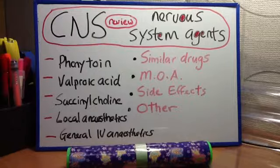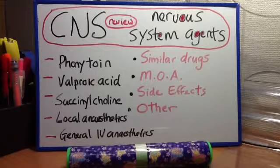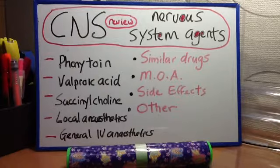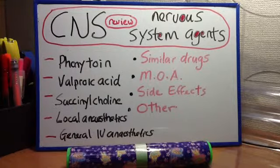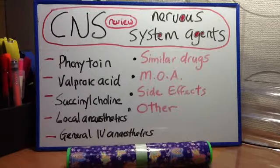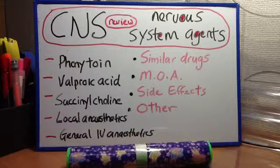General IV anesthetic agents. Similar drugs include propofol, ketamine, benzodiazepines, barbiturates, and opioids. MOA for propofol: mechanism of action is unknown, but it may act to prolong activity of the GABA receptor, thereby potentiating the effect of GABA at the postsynaptic neuron. There is also etomidate and ketamine. Clinical uses for propofol: induction and maintenance of anesthesia and conscious sedation. Side effects: hypotension and chemical pancreatitis.